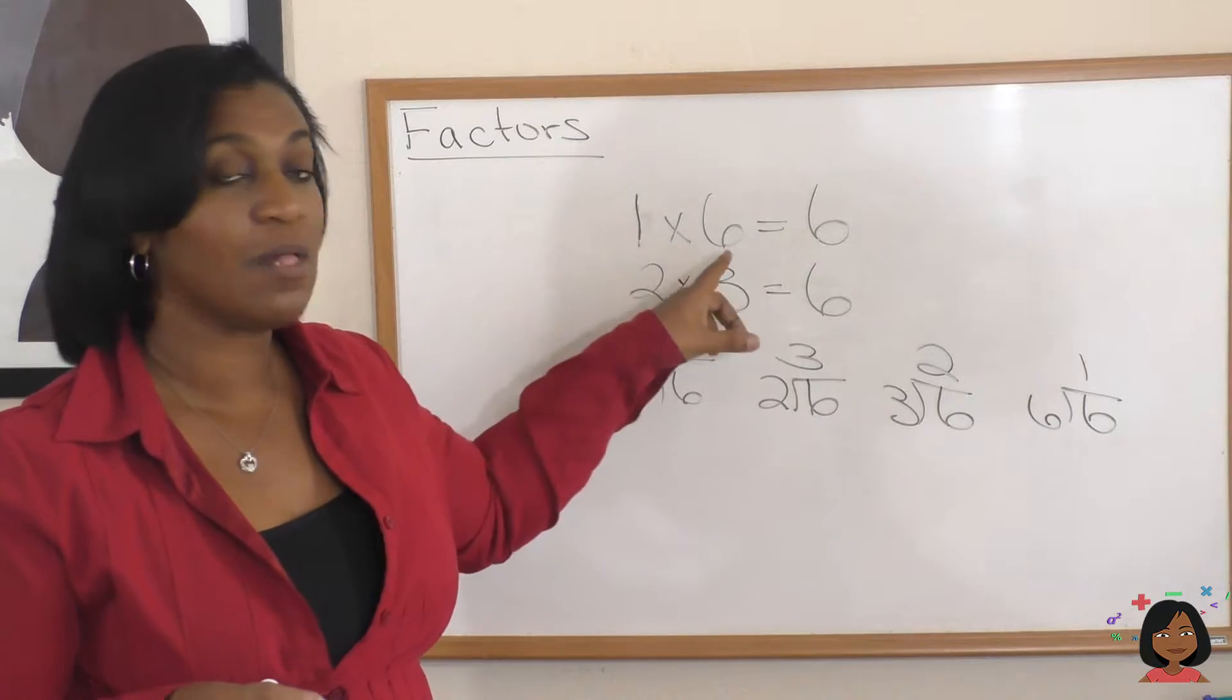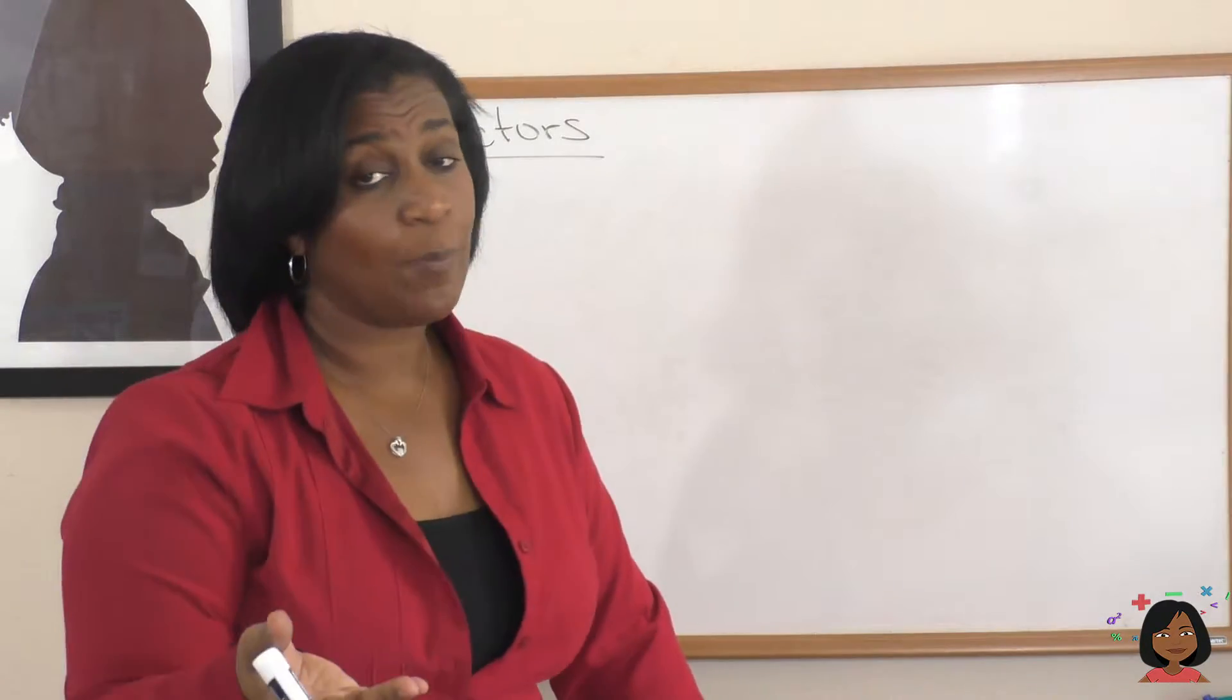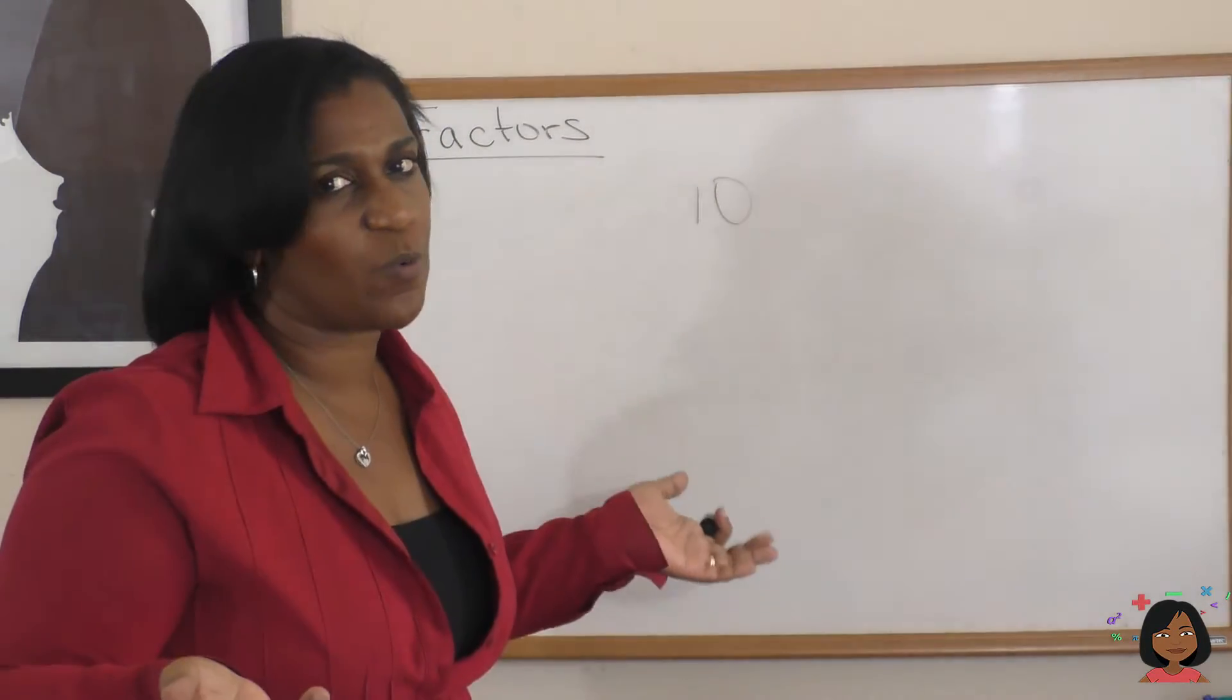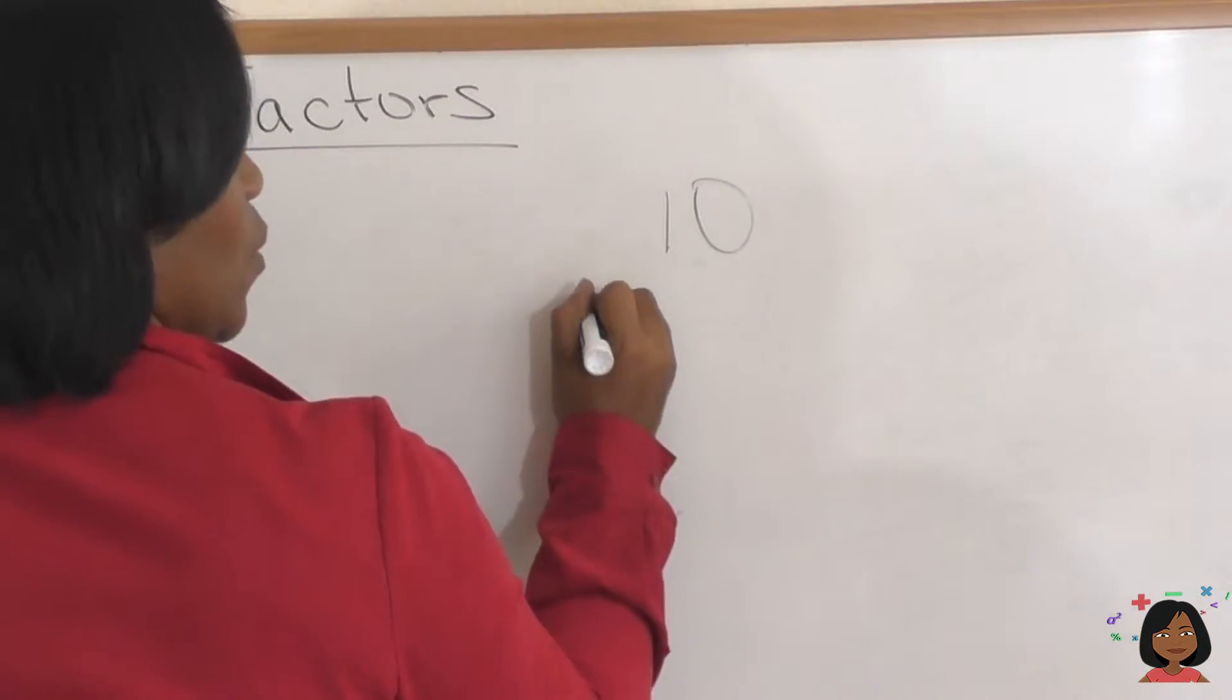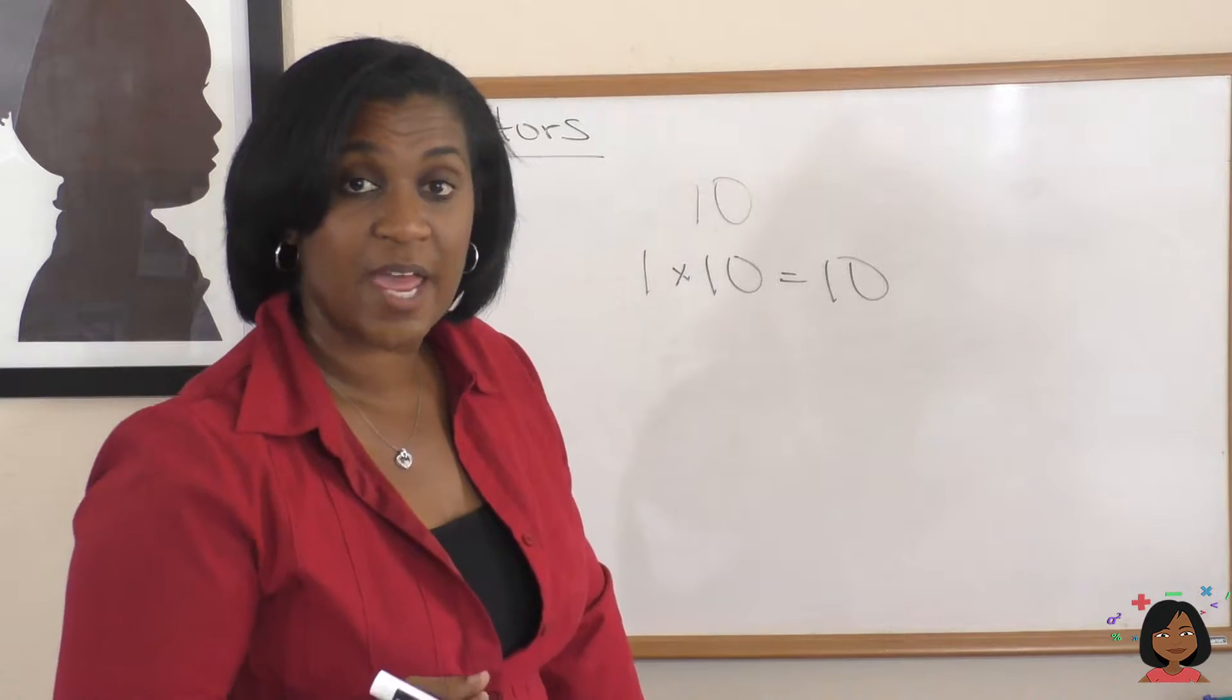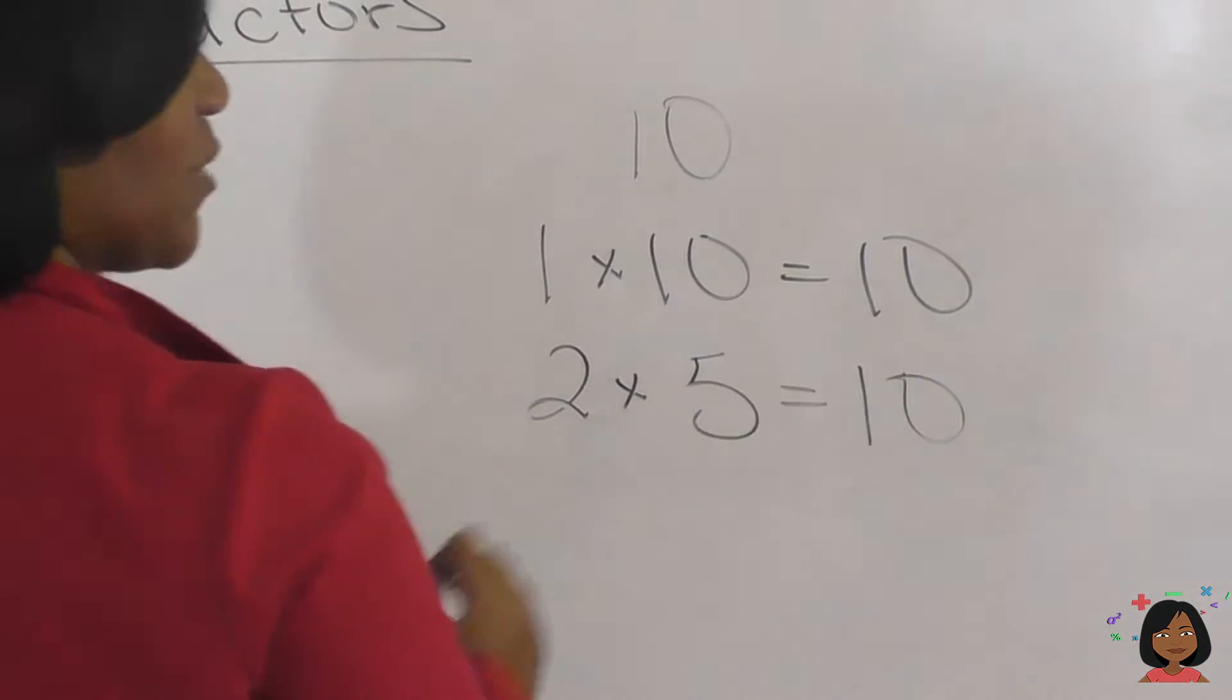Okay, so these numbers when multiplied together equals 6. We call them factors. Let's try it with another number. How about the number 10? So if I have the number 10, what are the factors of 10? Well, it's always good to start with the number 1, because you know 1 times that number, right? 1 times 10 will give us 10. Are there any other numbers that when multiplied together give us 10? How about 2 and 5? Yep, they also give us 10.